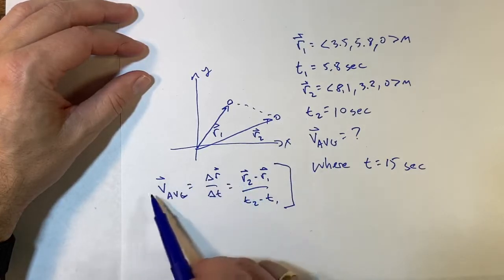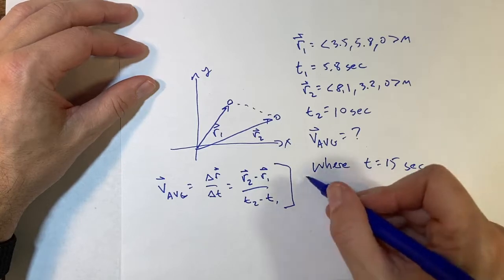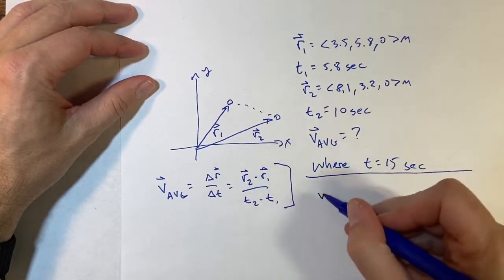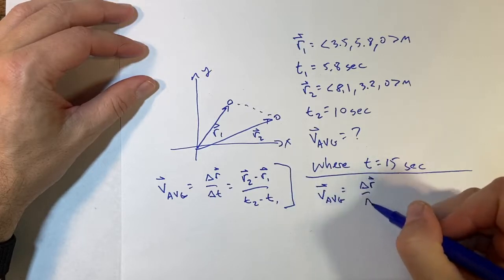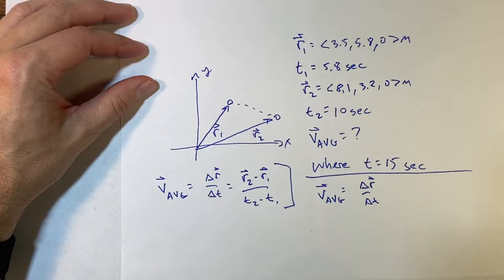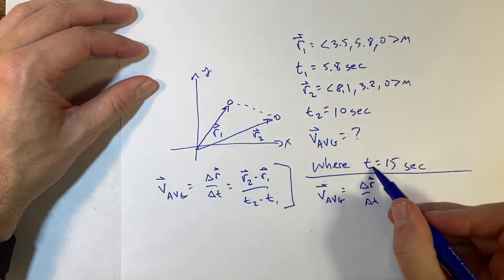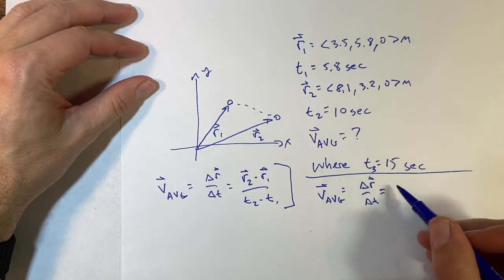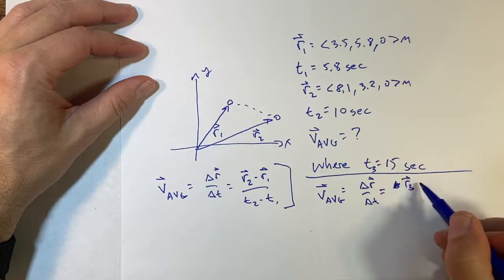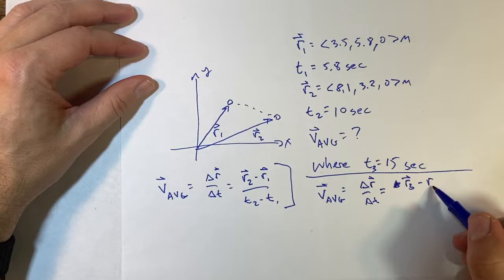Now where is it at t equals 15 seconds? I'm going to do this too. So if I use, if I look at this equation right here and I rewrite it, so I say let's put a line right there. So say v average equals delta r over delta t, but now let's call this time, oh t, let's call this t3. So let's say this is equal to r3 minus r1, or r2, it actually doesn't matter. I'm going to say r1 over t3 minus t1.